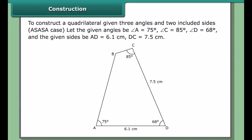To construct a quadrilateral given three angles and two included sides — the ASASA case — let the given angles be angle A = 75°, angle C = 85°, angle D = 68°, and the given sides BA = 6.1 cm and DC = 7.5 cm.